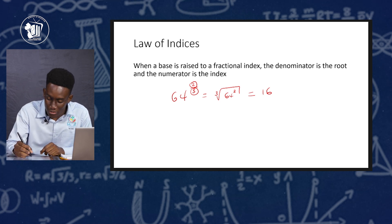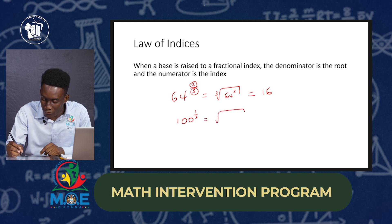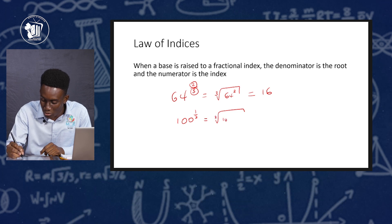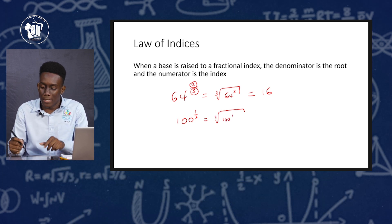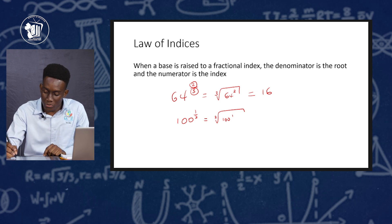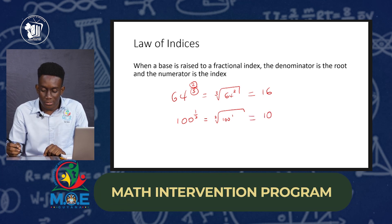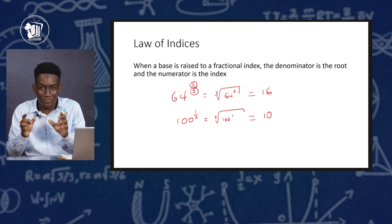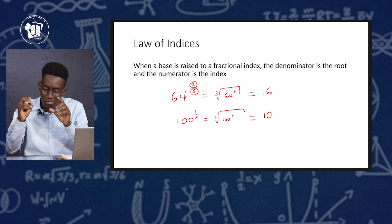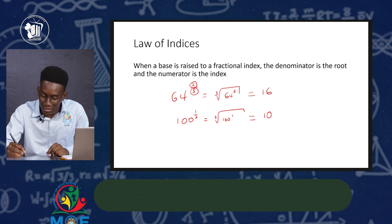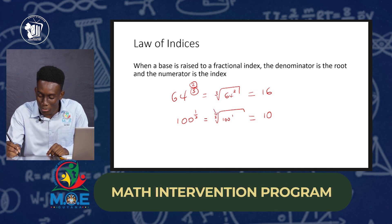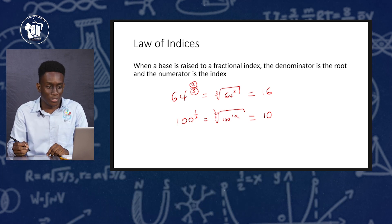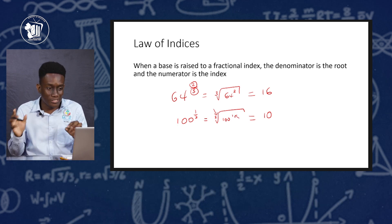Another example: 100 raised to the half power. This is the same as the square root of 100 raised to the first power — because the denominator 2 goes in the root part and the numerator 1 is the power. The square root of 100 is simply 10. So for fractional powers without a calculator, the denominator goes in the root and the numerator goes as the power.